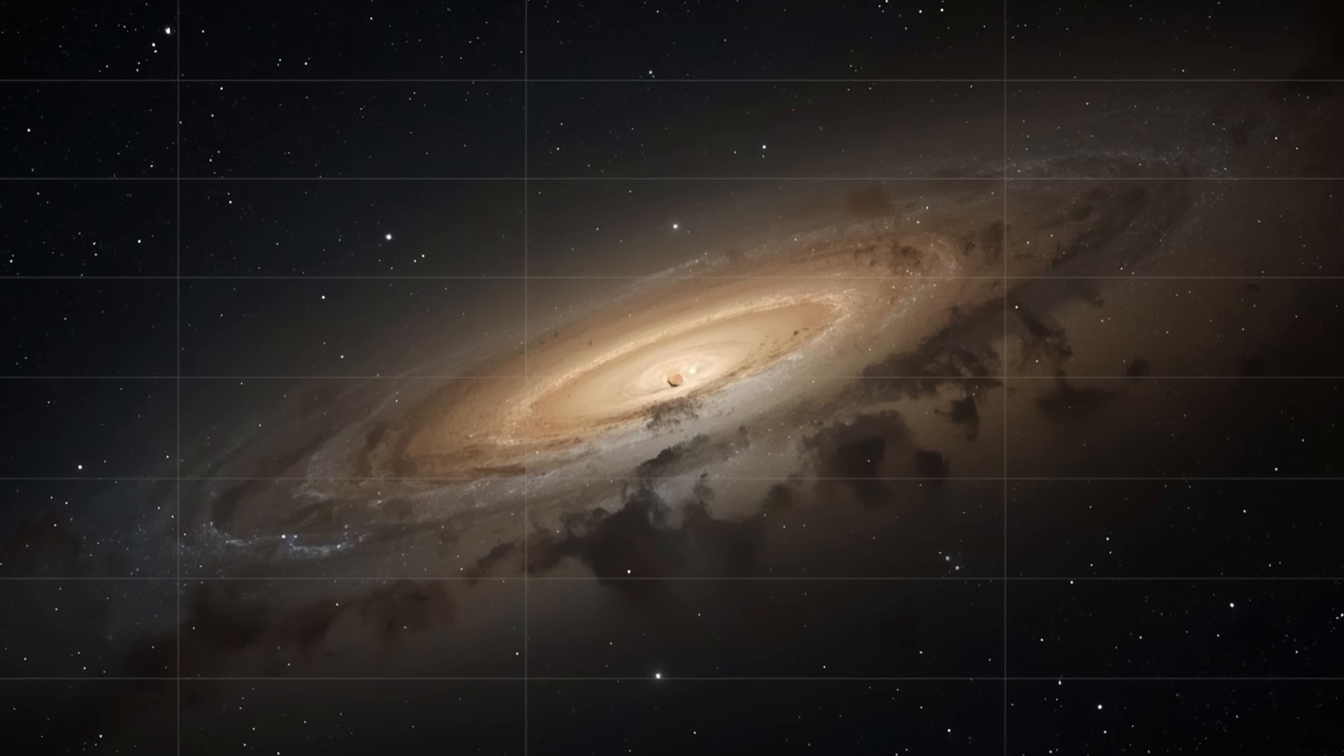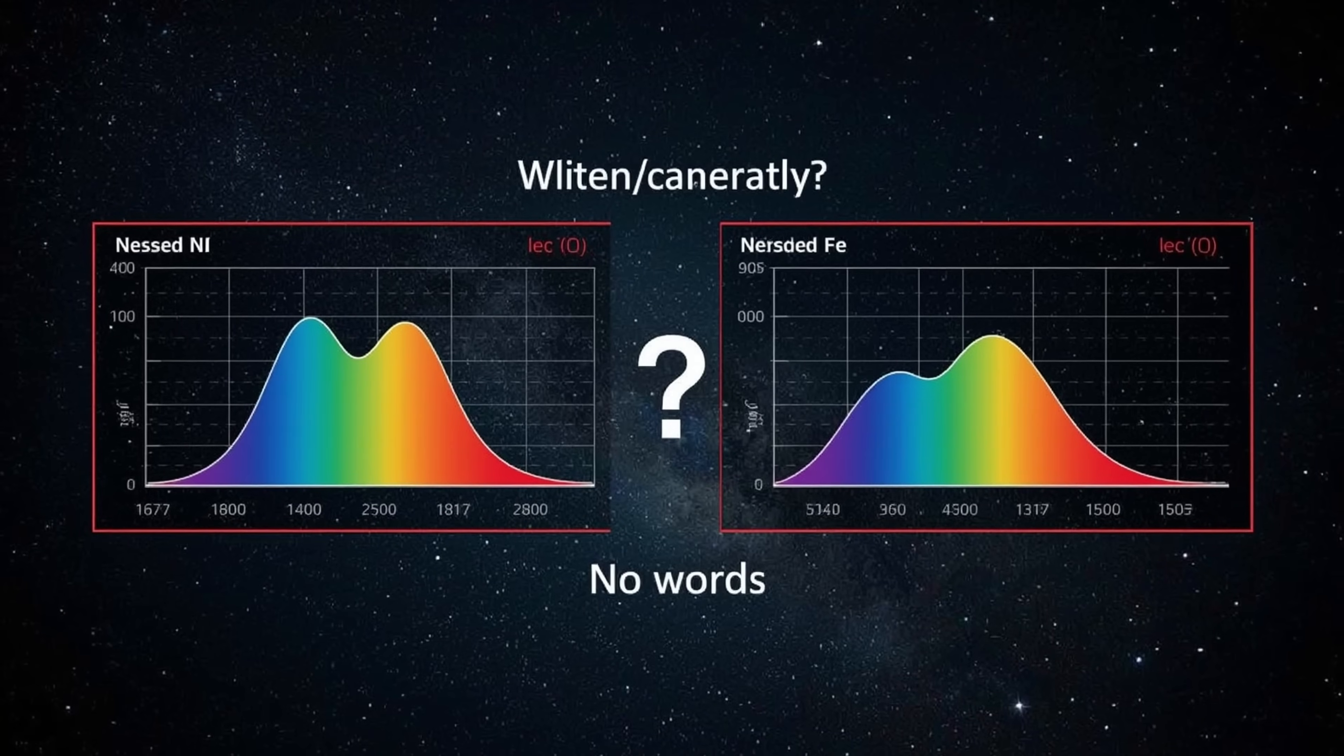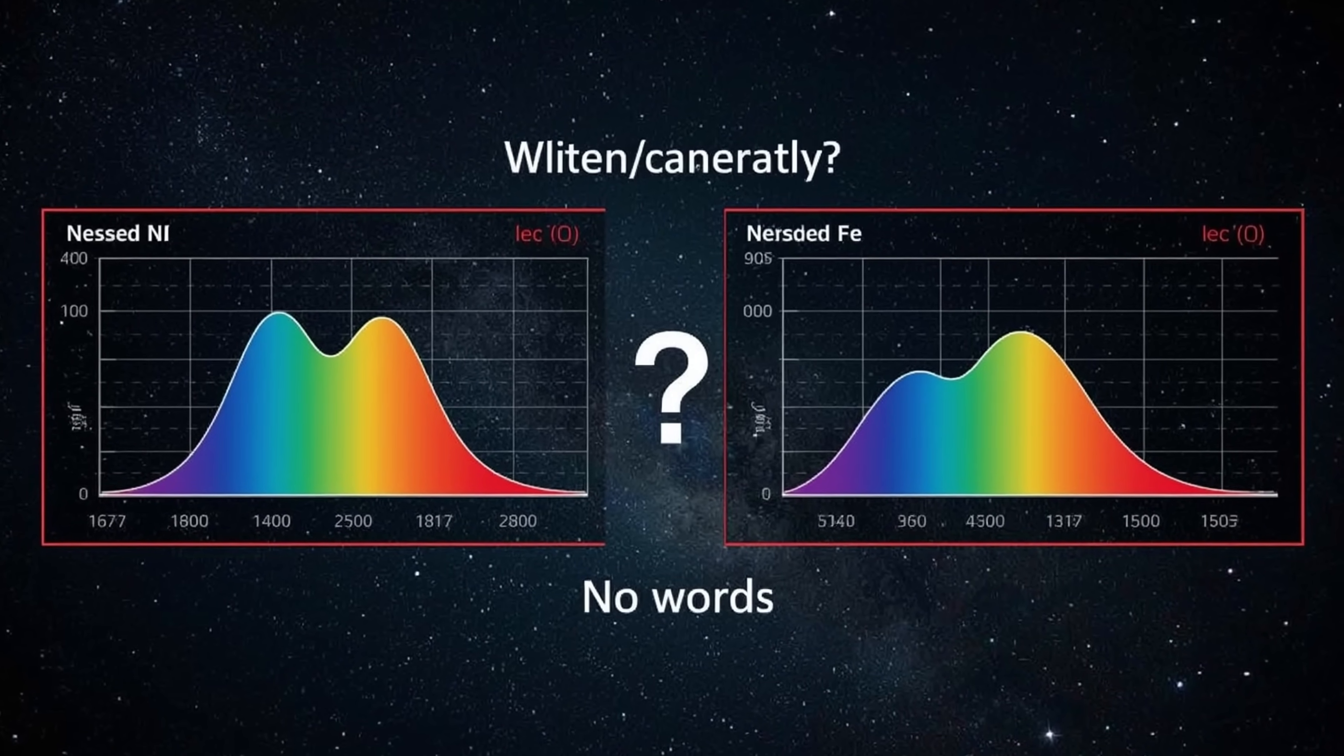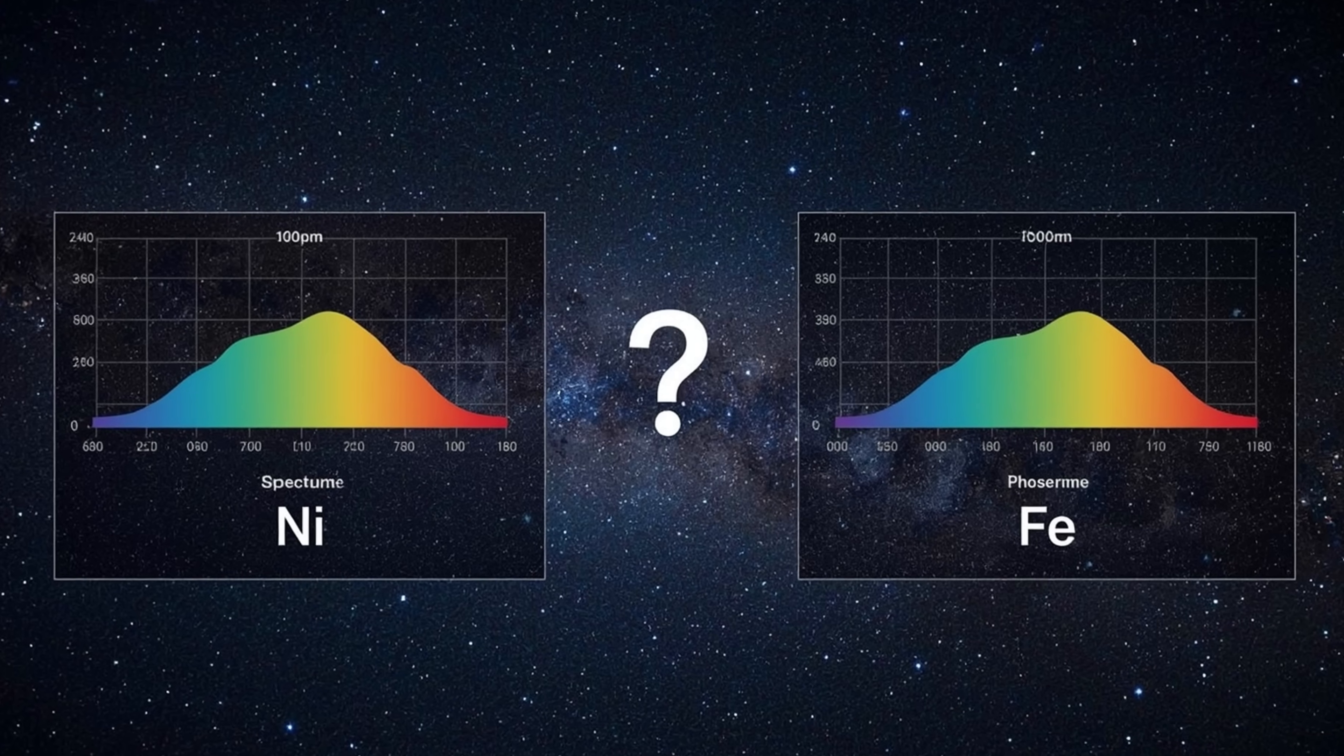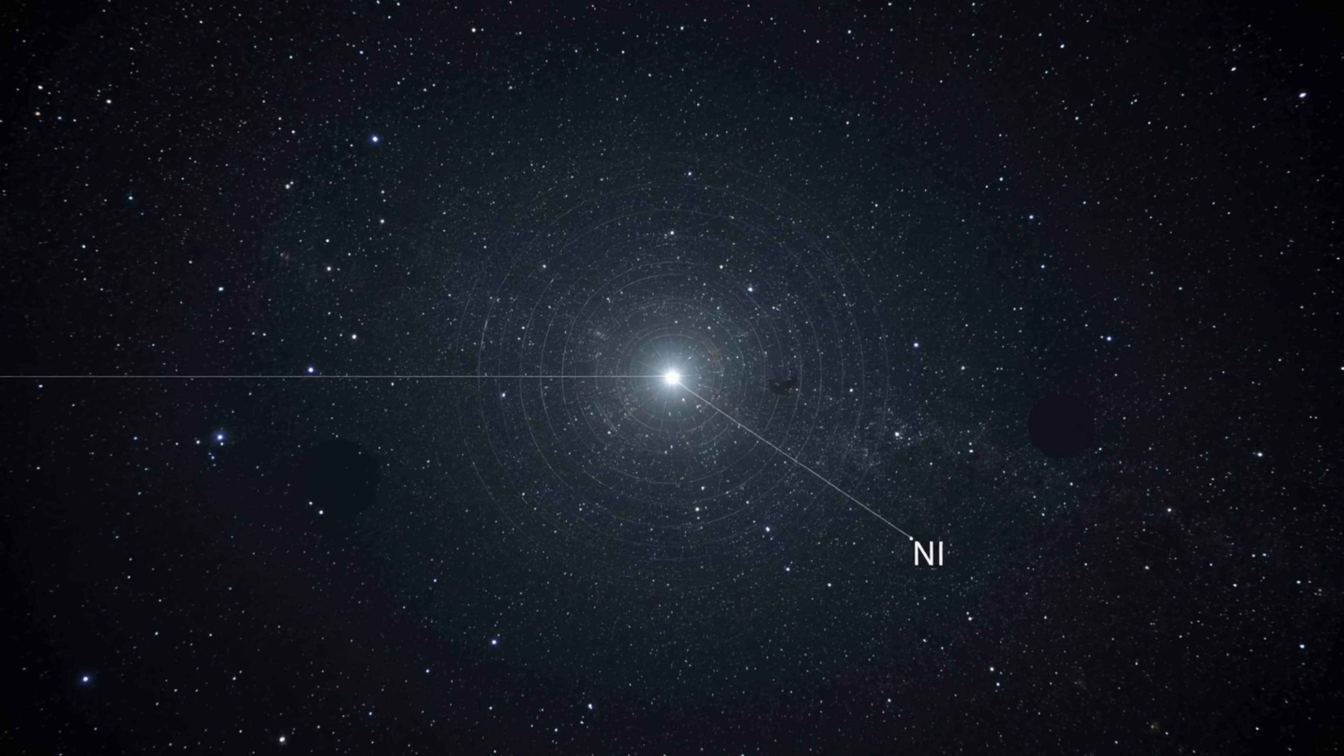The detection of nickel without corresponding iron lines adds another puzzle. The steep increase in both CN and nickel production as the comet approaches the Sun indicates temperature-dependent processes are at work, but the exact mechanisms releasing these species remain under investigation.